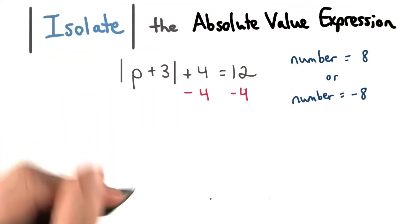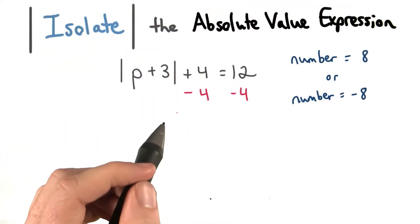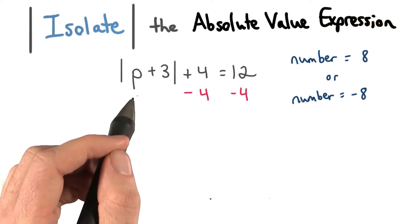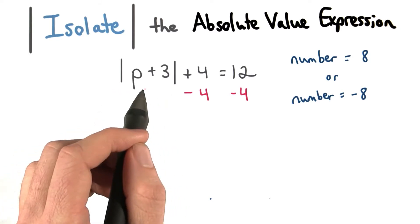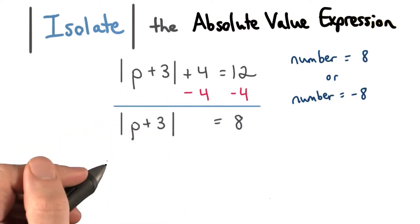But where does this show up in my equation? If we subtract 4 from both sides, we're going to isolate the absolute value. We'll get the distance of p plus 3 alone. This is where the 8 shows up.